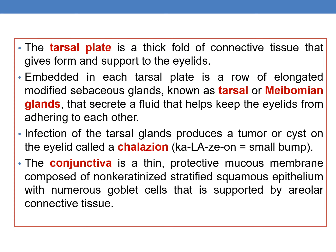The tarsal plate is a thick fold of connective tissue that gives form and support to the eyelids. Embedded in each tarsal plate is a row of elongated modified sebaceous glands known as tarsal or meibomian glands, which secrete a fluid that helps keep the eyelids from adhering to each other. Infection of the tarsal glands produces a tumor or cyst on the eyelid called a chalazion.